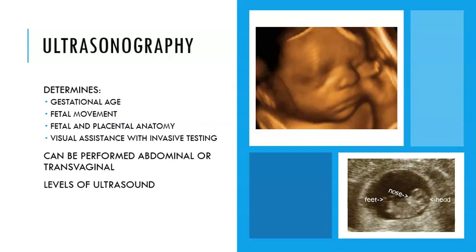There are two types of ultrasound: abdominal and transvaginal. Transvaginal is important earlier in pregnancy because the fetus has not yet come up above the pubic bone, and sound waves cannot see through bones. A wand is inserted into the vagina to visualize the fetus, placenta, and other structures through the cervix. As the fetus grows and comes over the pubic bone, abdominal ultrasound becomes the best way to visualize the baby.